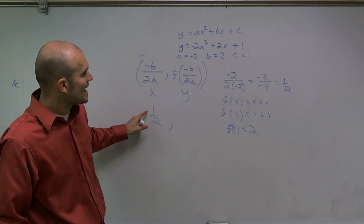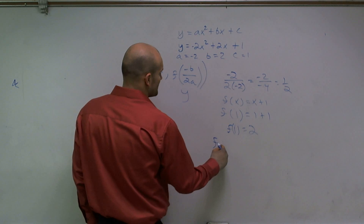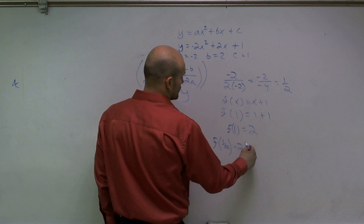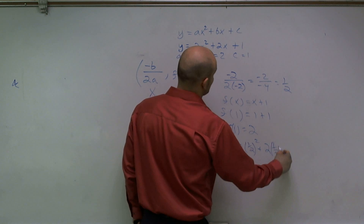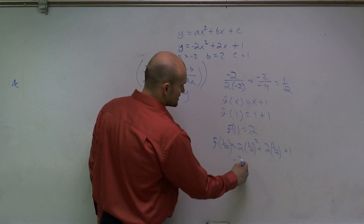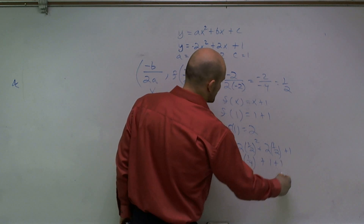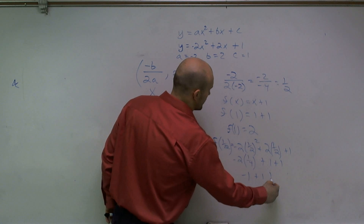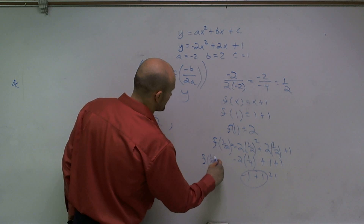So I'm going to plug 1 half into my function. f of 1 half equals negative 2 times 1 half squared plus 2 times 1 half plus 1. Now, 1 half squared is 1 fourth, so it's negative 2 times 1 fourth plus 2 times 1 half, which is 1, plus 1. Negative 2 times 1 fourth is negative 1, plus 1 plus 1 — the negatives cancel — leaving 1. So f of 1 half equals 1.